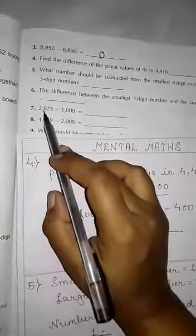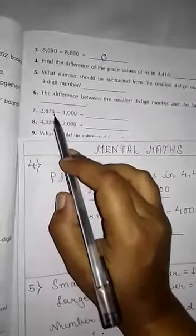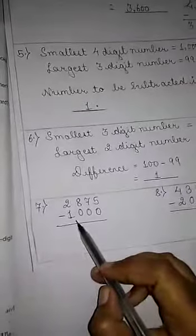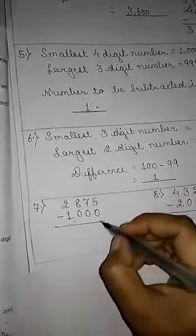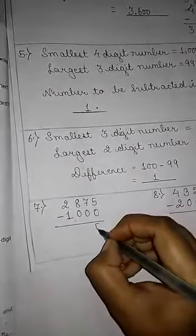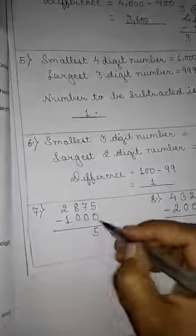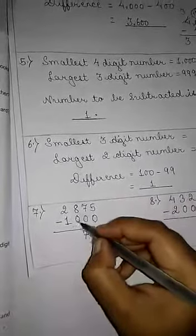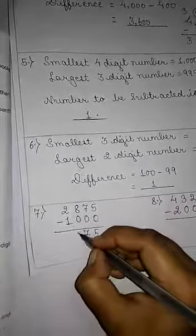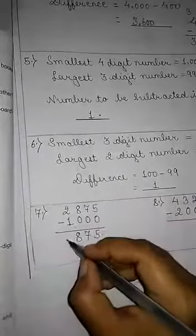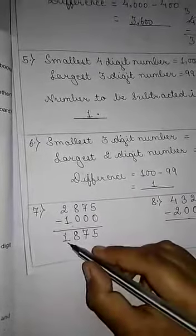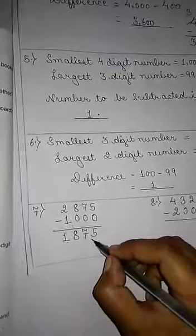Seventh question: we will arrange in columns and do the subtraction. 5 minus 0 is 5; 7 minus 0 is 7; 8 minus 0 is 8; 2 minus 1 is 1. Hence, our required answer is 1,875.